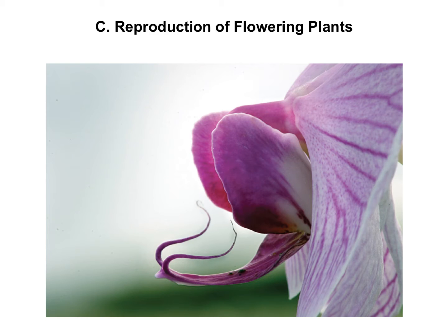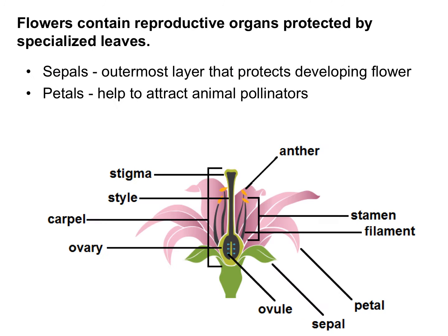Hi everyone, this is Ms. Rose. Today we're going to cover the C section of notes on reproduction of flowering plants — how plants that have flowers will reproduce. Right here you're looking at an orchid flower. What's interesting about this one is that it has a specialized petal on the lower part that acts as a landing point for pollinators. You have this diagram in your notes on page 11, so make sure you fill in all of the diagram of the flower.